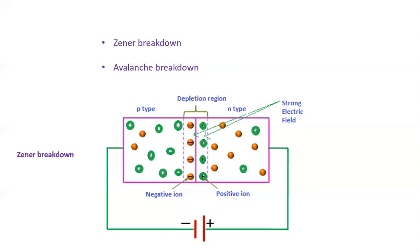This breakdown can happen in two ways. When the breakdown happens in one mechanism, we call it Zener breakdown, and when it happens in another way, we call it avalanche breakdown. We will see how each of these breakdowns occurs in a PN junction diode in this lecture.